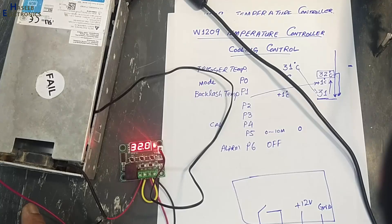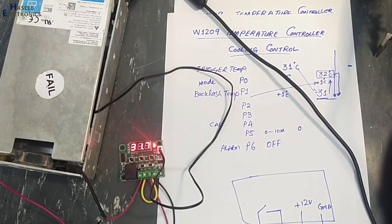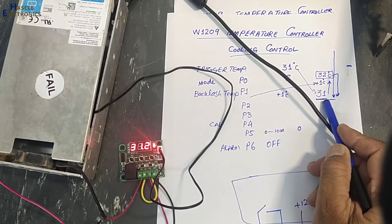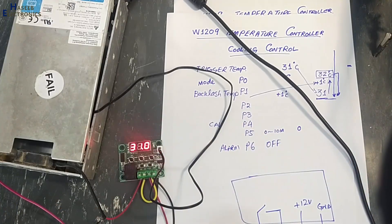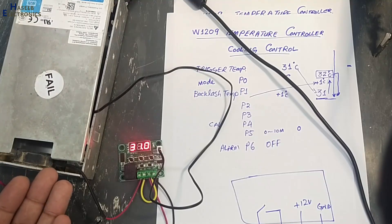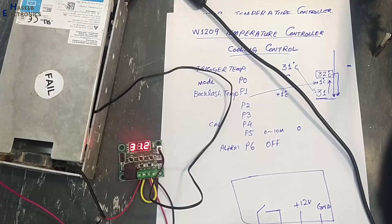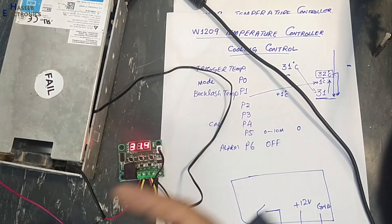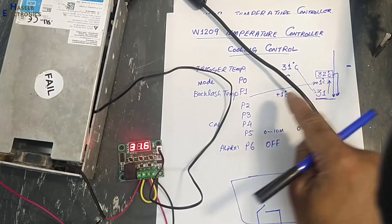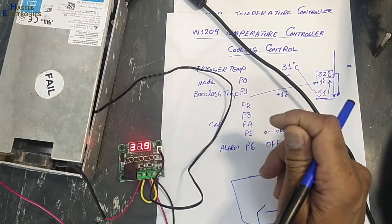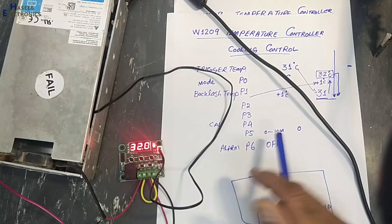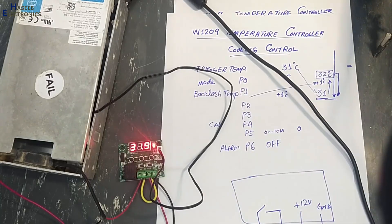The temperature is now increasing. When it reaches 32°C, the cooling fan turns on and sucks air from the box to decrease the temperature. Yes — now the fan is turned on and the temperature is decreasing. As soon as temperature touches 31°C the fan will turn off and the temperature will start increasing again. This automatic system controls the fan accordingly.